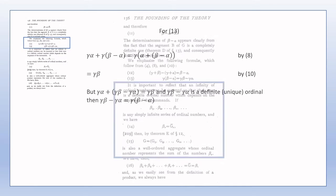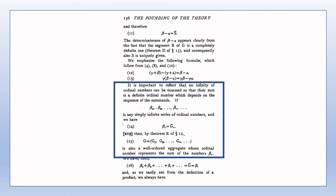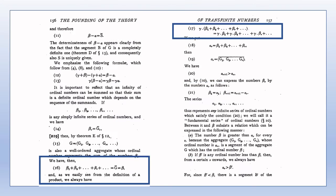The β₁, β₂, and so on being a simply infinite series means there is a simple ordering defined on the series of betas, of which there are infinitely many. Note that the betas are not necessarily in order of magnitude — even though βᵢ is lower in rank than βᵢ₊₁, we do not necessarily have βᵢ < βᵢ₊₁. Point 16 shows that the sum of an infinite number of ordinal numbers is again an ordinal number, with the help of Theorem E from Section 12, which did not require the aggregate G to be a finite aggregate.